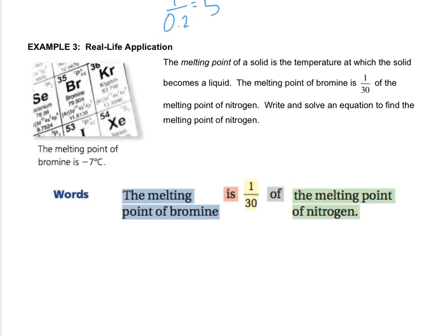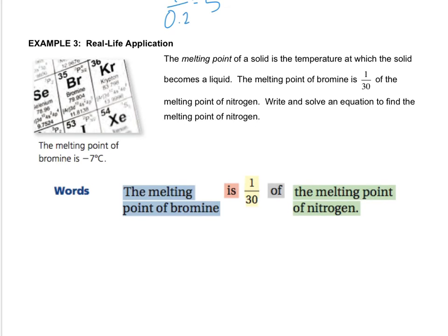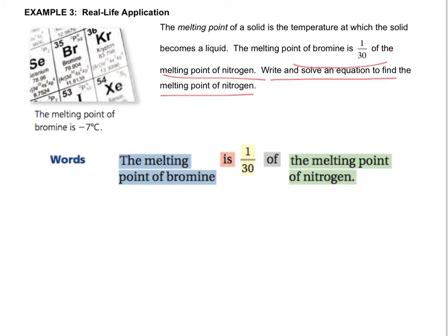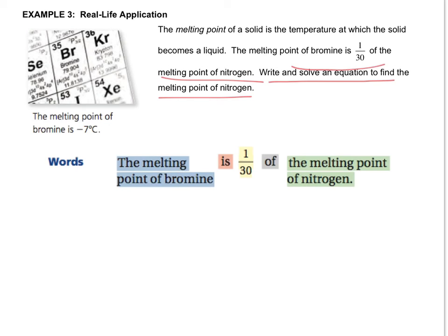Last one together. The melting point of a solid is the temperature at which the solid becomes a liquid. The melting point of bromine is 1 30th of the melting point of nitrogen. Write and solve an equation to find the melting point of nitrogen. Now, since we're first starting out, I've kind of given you a little setup. This is how we're going to write our equation and then we'll solve it. So here we go. The melting point of bromine is the first thing I need to find. Well, it's not in the story. Oh, but it's right here in the picture. So, since I know the melting point of bromine, I will replace it with negative 7. When you see the word is in math, that means put an equal sign. So negative 7 equals. They tell me to put 1 30th right here. So I will do that.